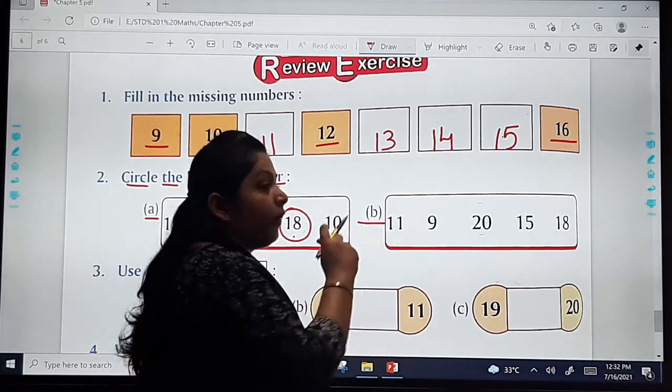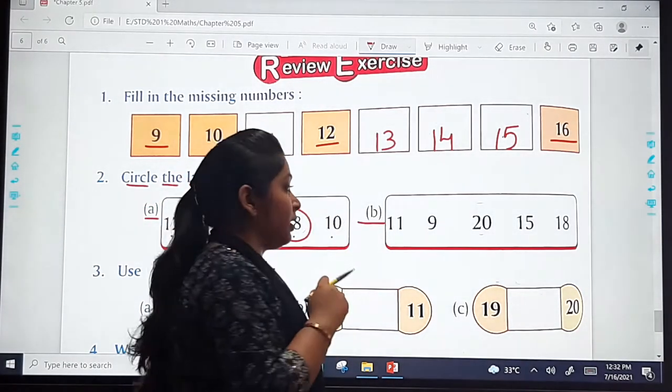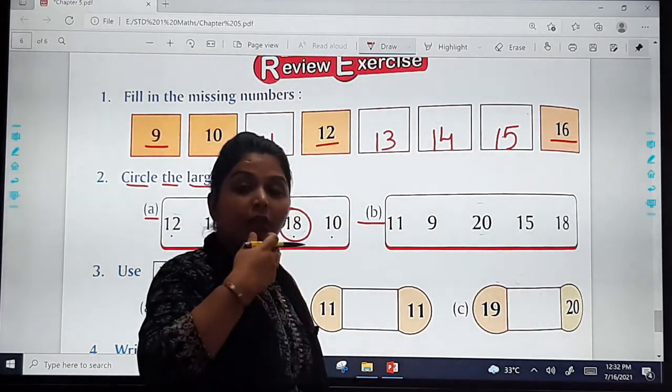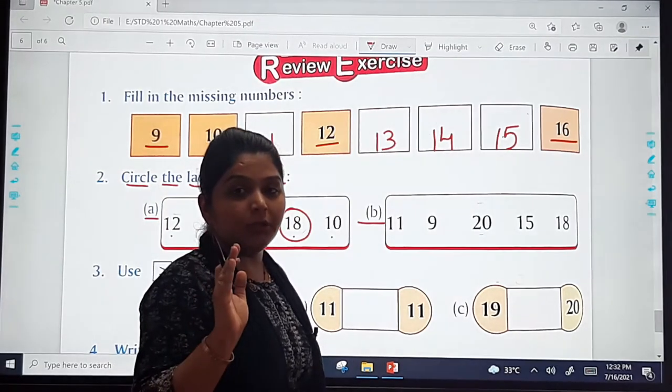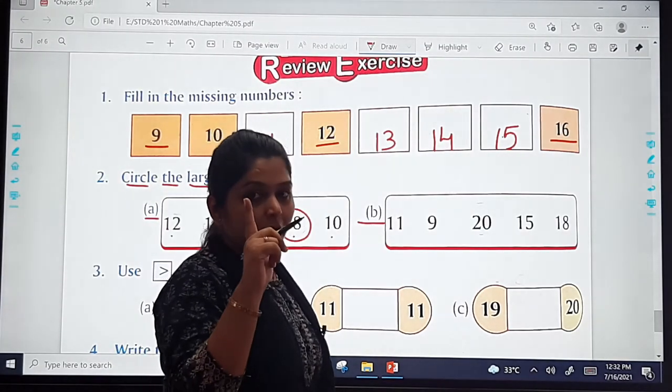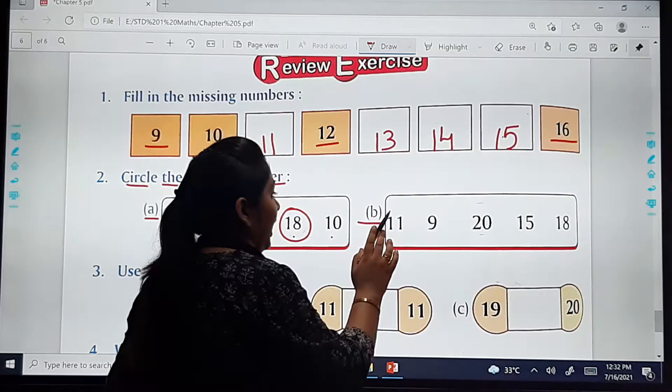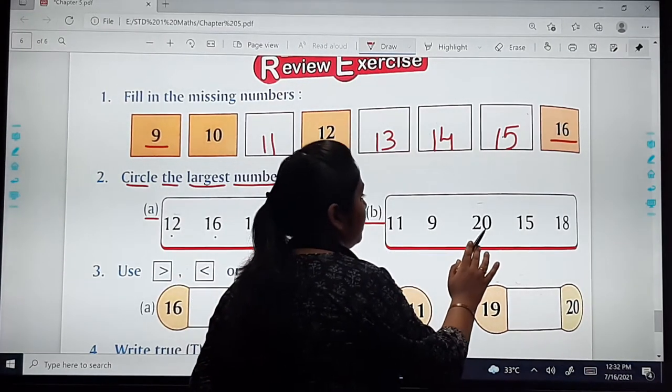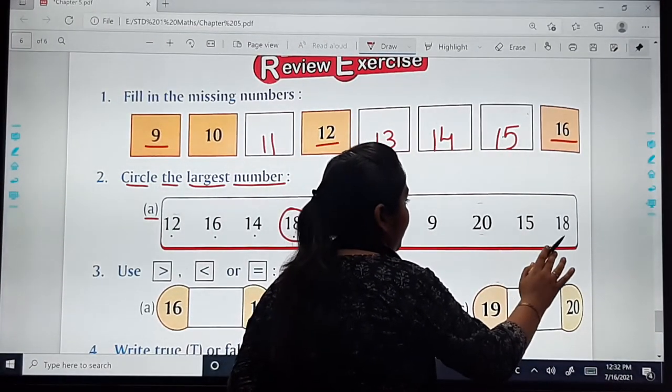Let's see the second one. Again, here are 5 numbers. We have to again find the largest number. Let us see. All of you already know. Number 11, 9, 20, 15, 18.